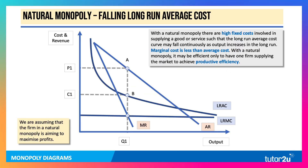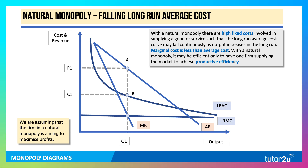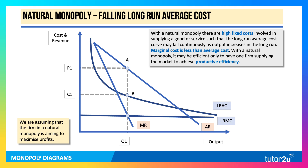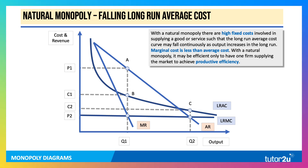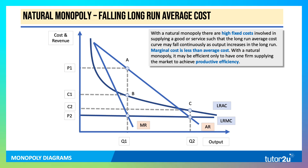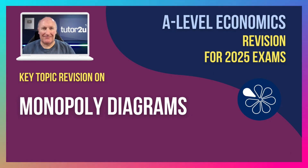Finally, natural monopoly. The nature of a natural monopoly is very high fixed costs in supply of a good or service, but marginal cost is low — assumed here to be constant — so average cost in the long run keeps falling continuously as output increases. With a natural monopoly, it may be efficient to have only one firm supplying the market to achieve productive efficiency. P1 would be the profit-maximising price, but what you really want is for the industry to achieve economies of scale — things like water utilities, postal services, broadband internet. However, if you price at marginal cost at price P2, you actually make a loss, so that would have to be subsidised. Alternatively, you could price a little higher where average cost meets average revenue. Those are the key monopoly diagrams you'll need for your Paper One Micro.